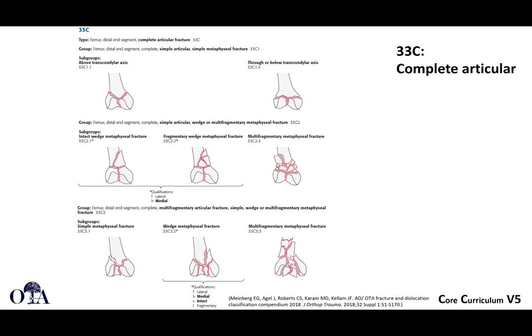Some simple C1 fractures can be treated with interfragmentary screws and retrograde intramedullary nailing. If you have something like a severely comminuted fracture in an elderly patient, you could consider distal femoral replacement. The AO/OTA classification really helps understand fracture patterns and determine surgical management.